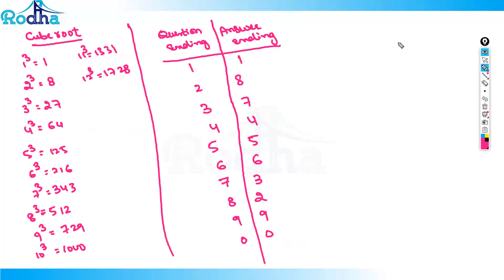Now we are into how to find the cube root of any number. If in the question it is ending with 1, the answer will end with 1. If ending with 2, the answer will end with 8. If ending with 3, the answer will end with 7. Similarly, just like with perfect squares, we will take an example and solve it.